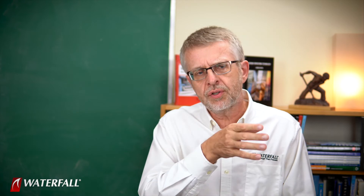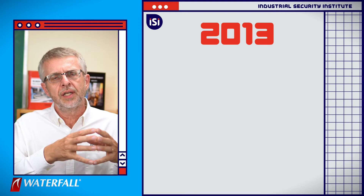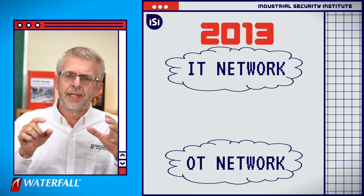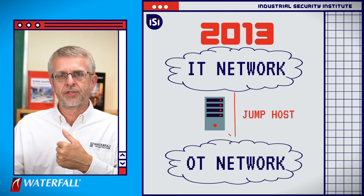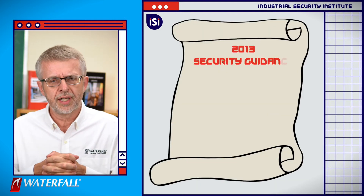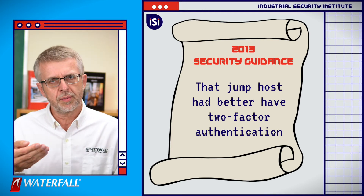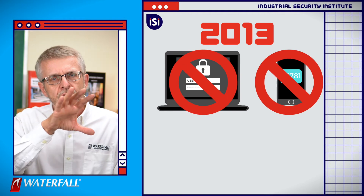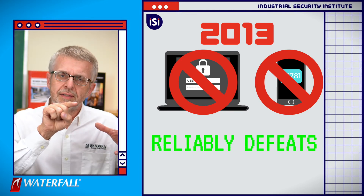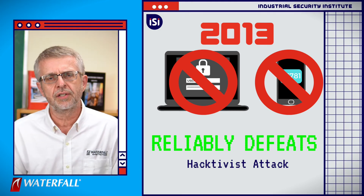In terms of defenses, how do our security systems stand up to this? In the 2013 scenario, the path from the IT network into the OT network was through the jump host — they stole credentials and logged in through it. But 2013 best practice security guidance says the jump host must have two-factor authentication. These attackers are operating remotely and don't have access to the two-factor system. So the 2013 software-based classic security system reliably defeats this class of hacktivist attack, because they cannot get in through the two-factor authenticated jump host.